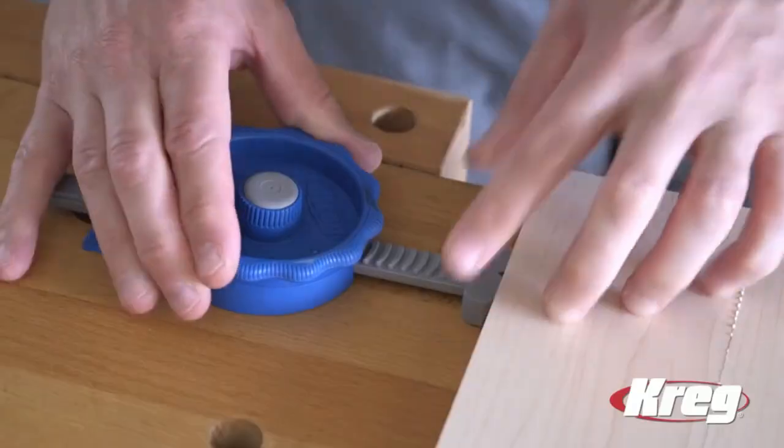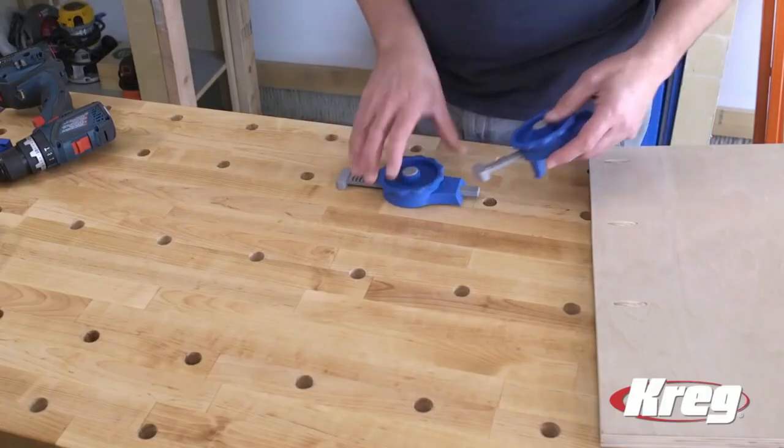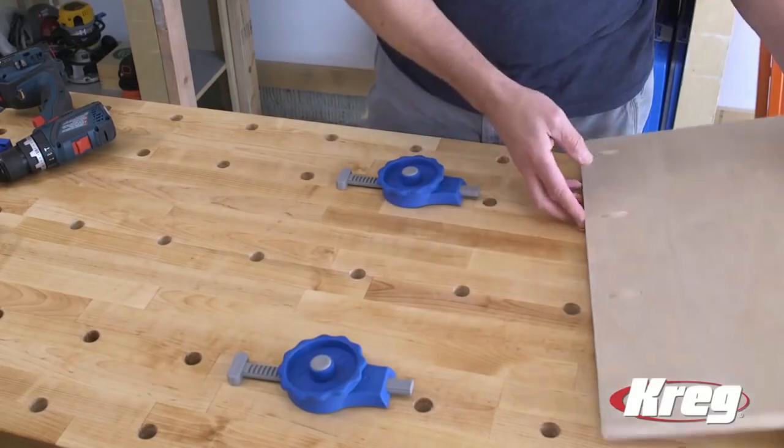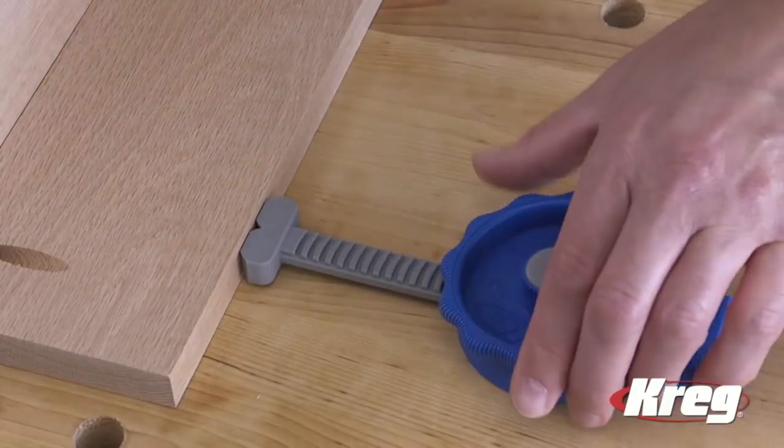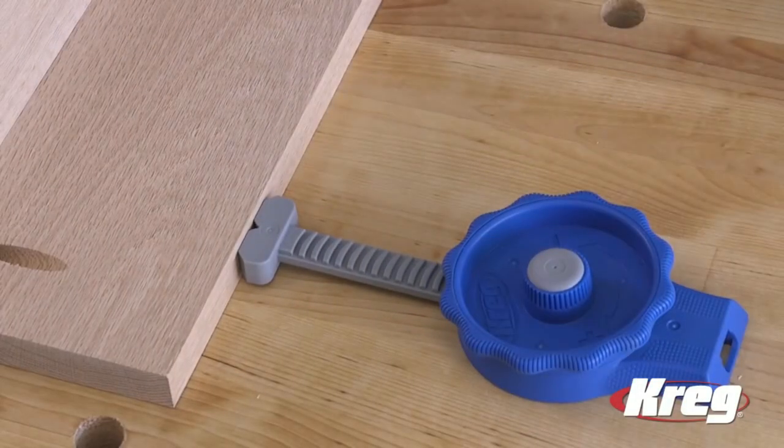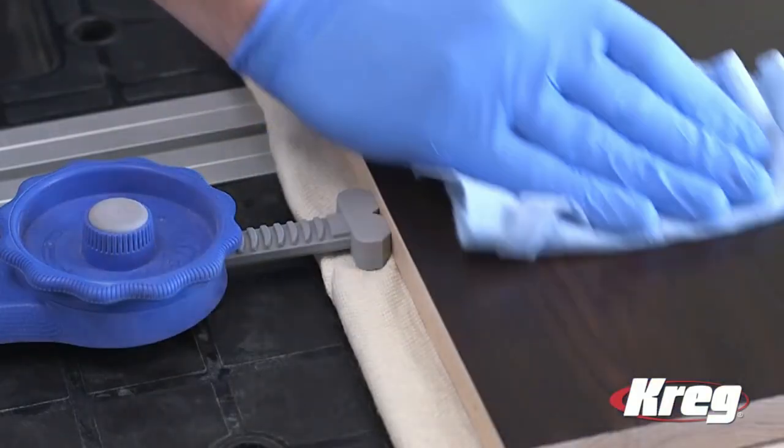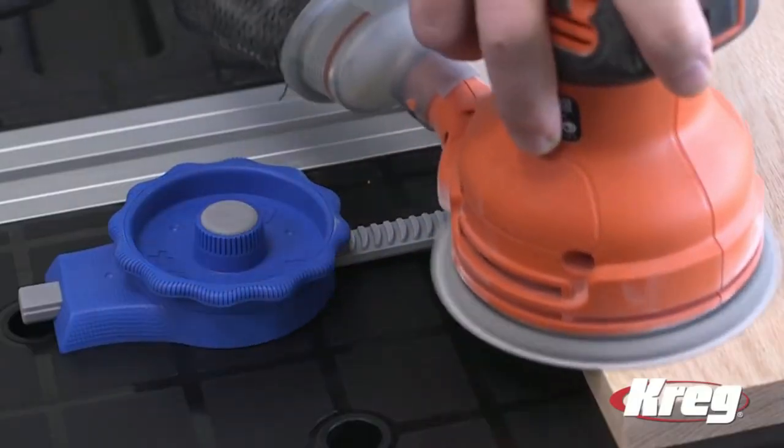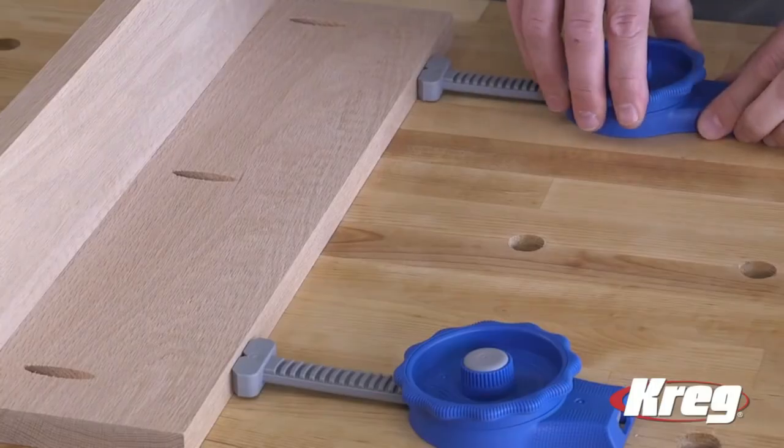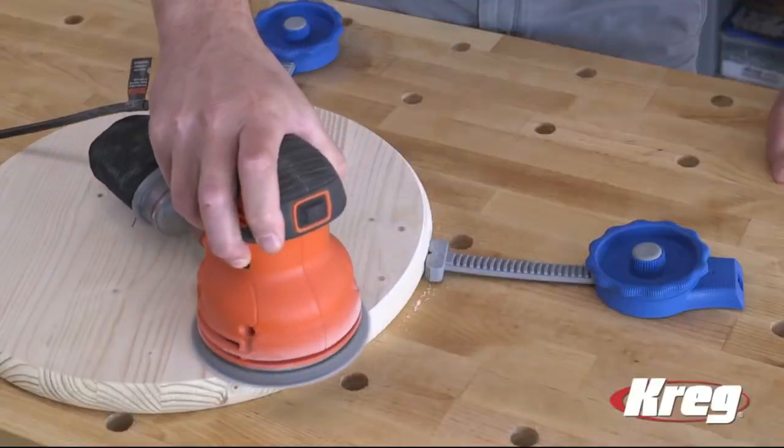By applying pressure from the side rather than from overhead, the inline clamp stays out of the way as you work. A peg that fits into any three quarters diameter hole holds the clamp in place, so the inline clamp makes it possible to get more from any bench with dog holes or any work surface where you can drill holes.